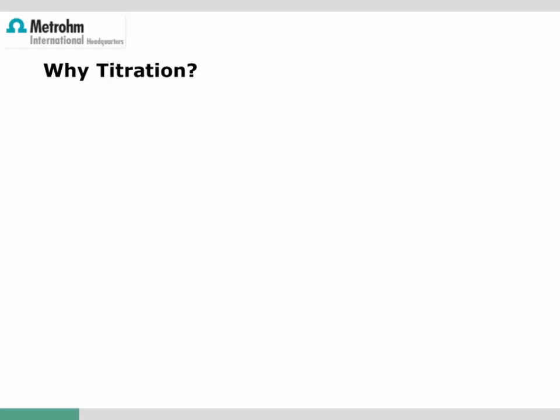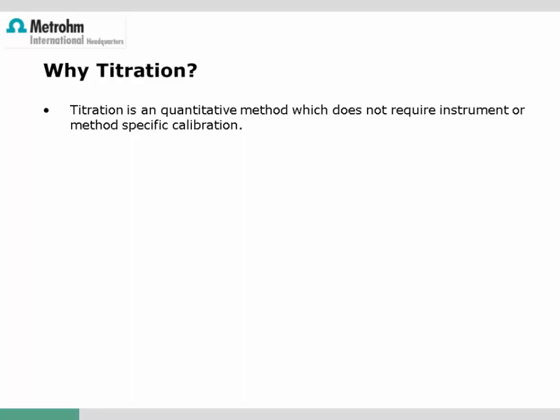Why is titration still widely used in nearly all labs? In comparison to chromatographic or spectroscopic methods, titration is an absolute method — it delivers a quantitative result without requiring any instrument or application-specific calibration. It is also a rather simple method; usually there is not much sample preparation required. The sample has to be weighed or measured volumetrically and some solvents added, but that's it for most applications.